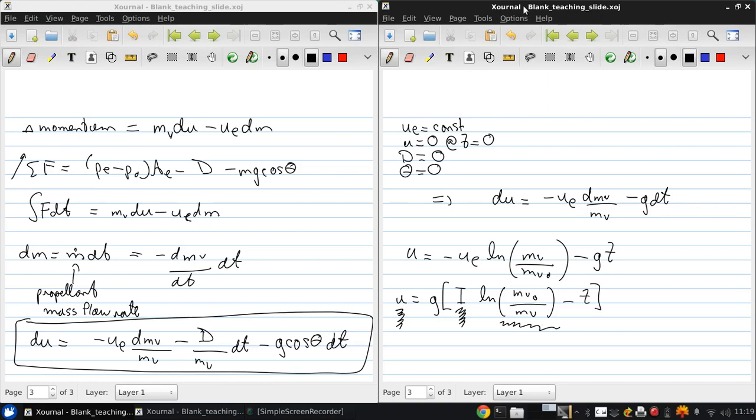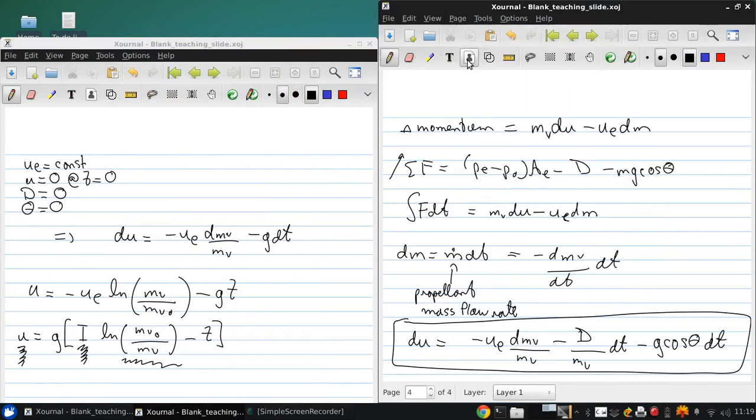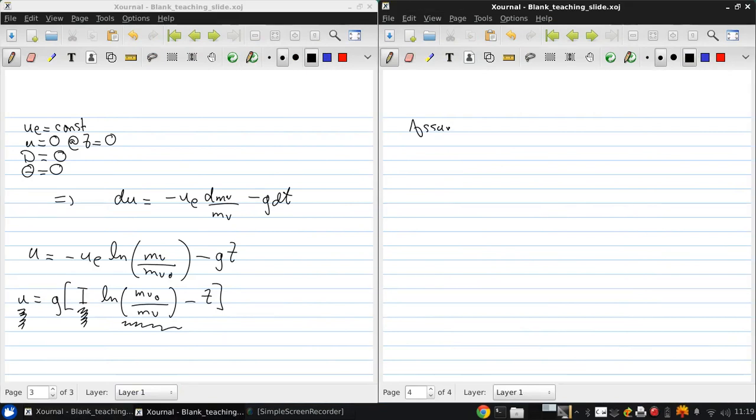Now if we keep on our train of simplifications and we assume that the mass flow rate is constant, then the vehicle mass flow rate is a function of time as mv naught minus mv final times t over tb, where tb is the time at which all the propellant is used up, and the b stands for burnout.